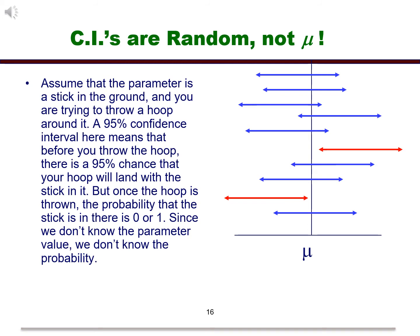Here is an easy way to think about it. Assume that the parameter is represented by a stick in the ground and you are trying to throw a hoop around it. A 95% confidence interval here means that before you throw the hoop, there is a 95% chance that your hoop will land with the stick in it. But once the hoop is thrown, the probability that the stick is in there is either 0 or 1. And technically, since we don't know the parameter value, we don't know the probability.